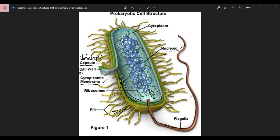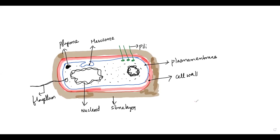This is the structure of a bacterial cell — now we will go into the details. I've drawn a bacterial cell for you all. As you can see, we have seen that the most outermost layer is being called as the slime layer. The slime layer can also be called as a capsule.